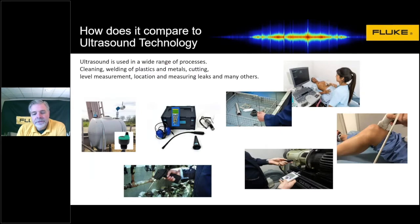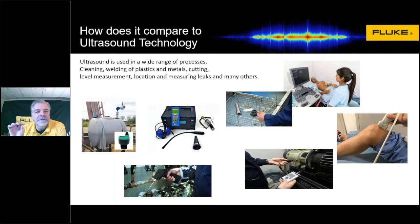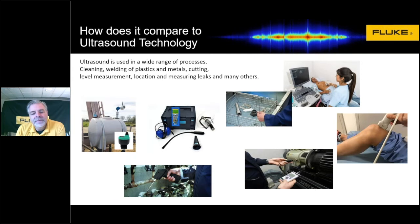Ultrasound is typically above our audible range. The II900 and II910 can see from about 5 kilohertz to 50,000 hertz. Most people can't hear above 20 kilohertz, and if you're older, it's even lower than that. We have the ability to hear high frequencies with this device and convert it into a visual screen.